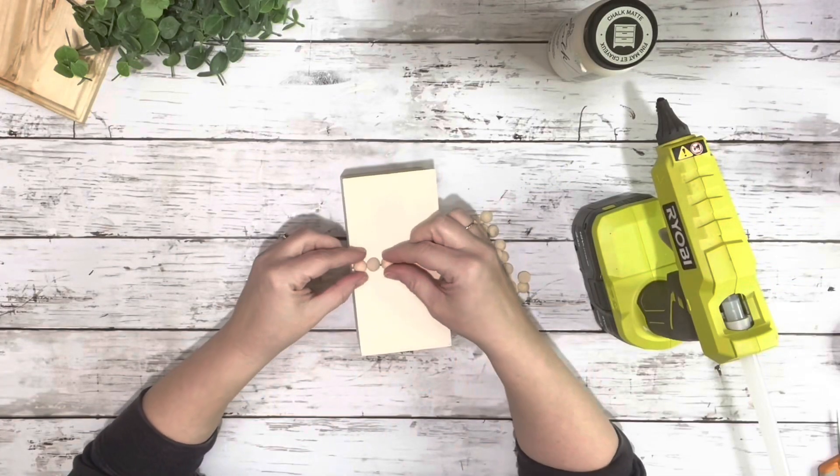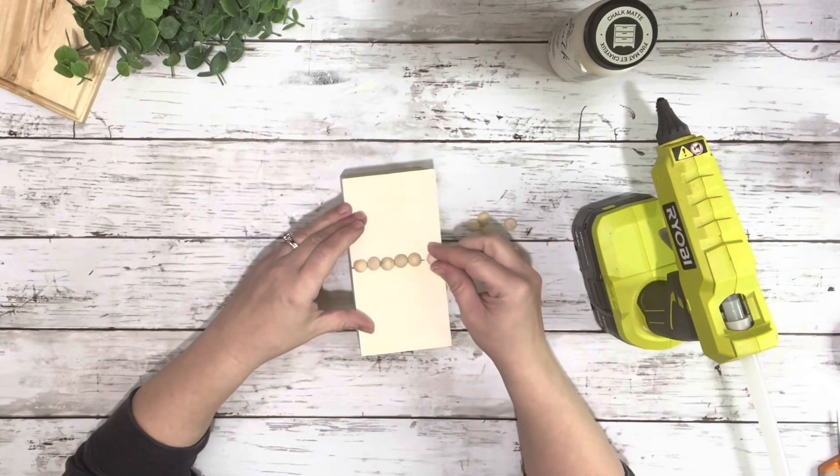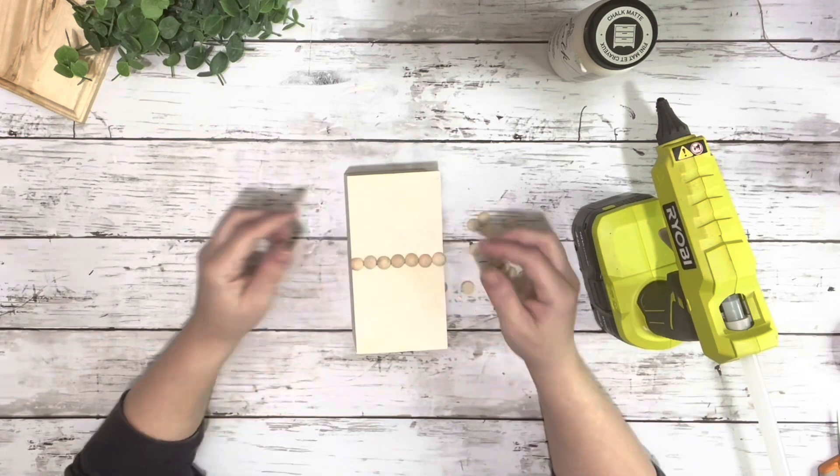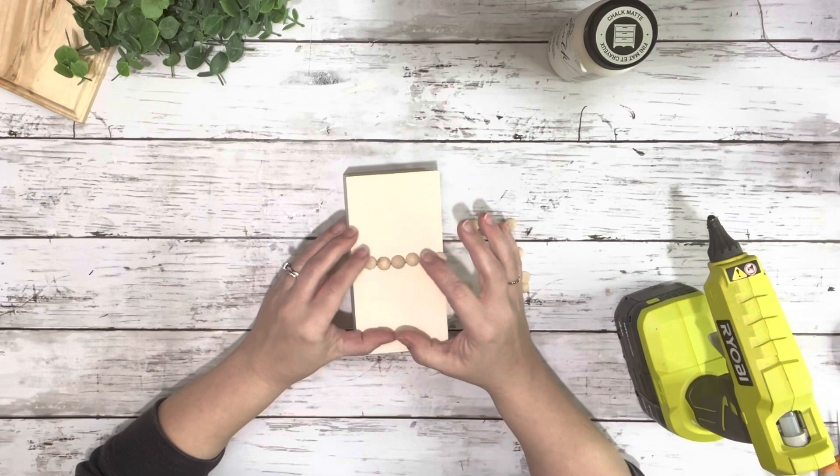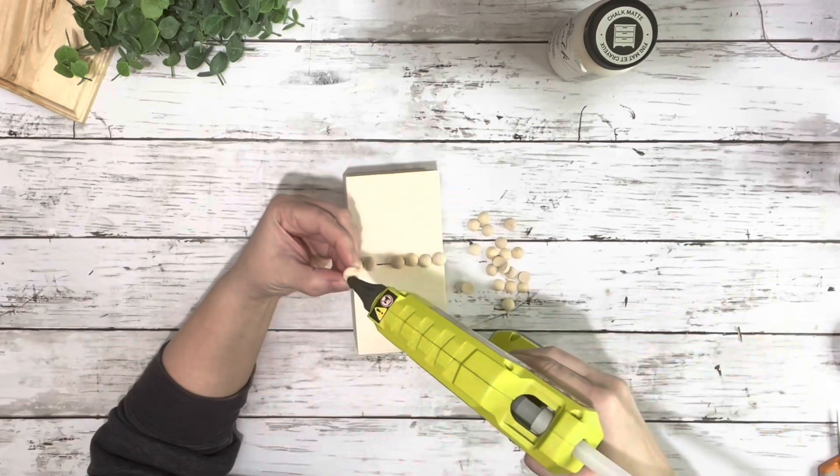And then I took the half round beads and placed them along the center where those two met. Once I had them in place, I just picked one up at a time and hot glued them down. And I did that around the entire thing.